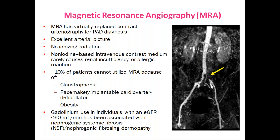Gadolinium use in individuals with an eGFR less than 60 ml per minute has been associated with nephrogenic systemic fibrosis and nephrogenic fibrosis dermopathy.